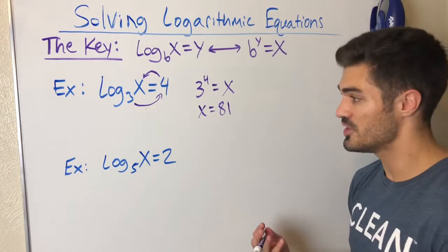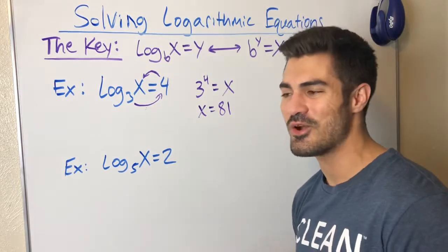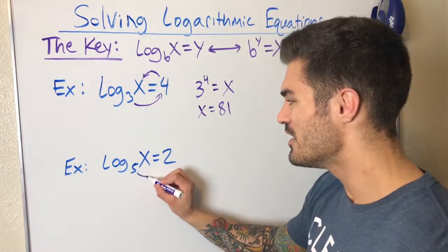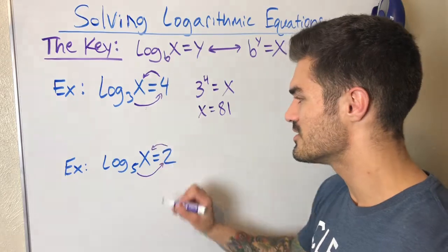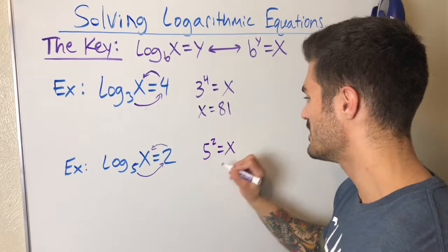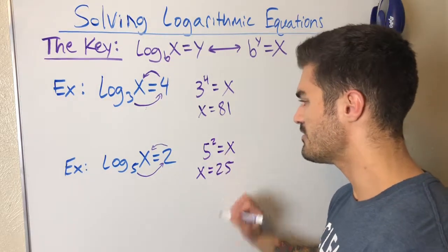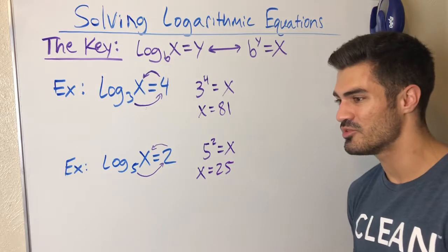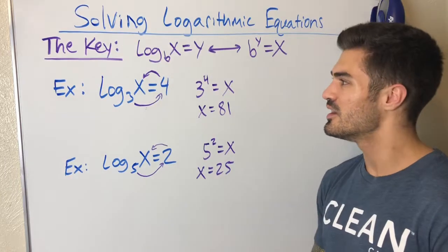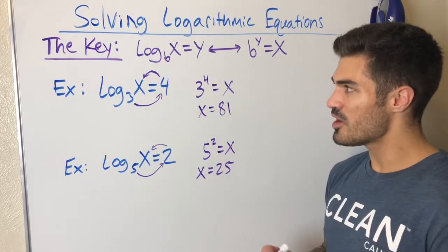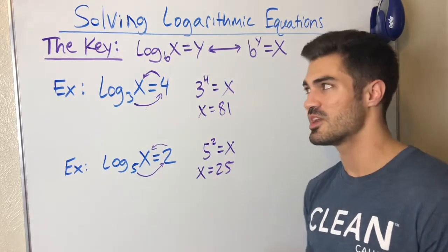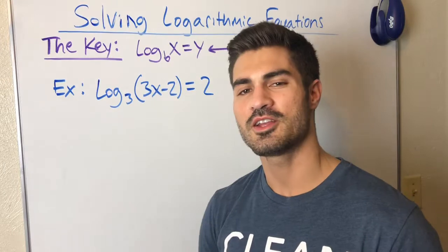This arrow trick is just what I use — whatever works for you. I start at the base: five to the second power equals x, which means x equals 25. The examples won't always be this simple — you'll almost always have to do some algebra using exponential properties. But most problems come down to getting log of something equals something so you can turn it into an exponential.